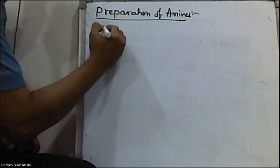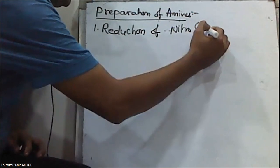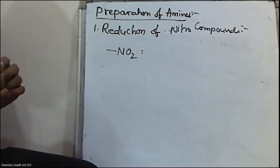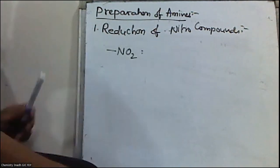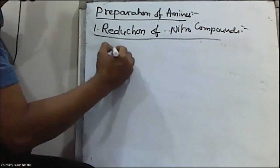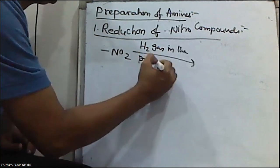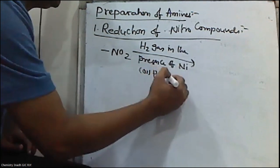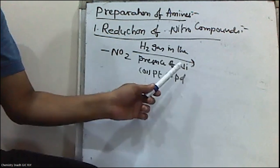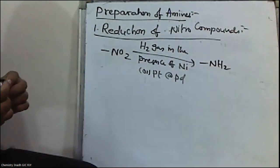Preparation of amines. The first method is reduction of nitro compounds. We know that organic compounds containing the NO2 group are called nitro compounds. When nitro compounds are treated with hydrogen gas in the presence of finely divided nickel, palladium, or platinum, amines are formed. This is a reduction reaction.